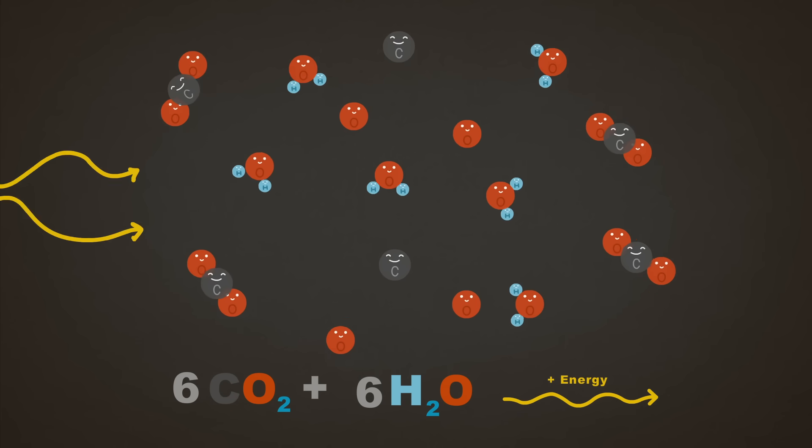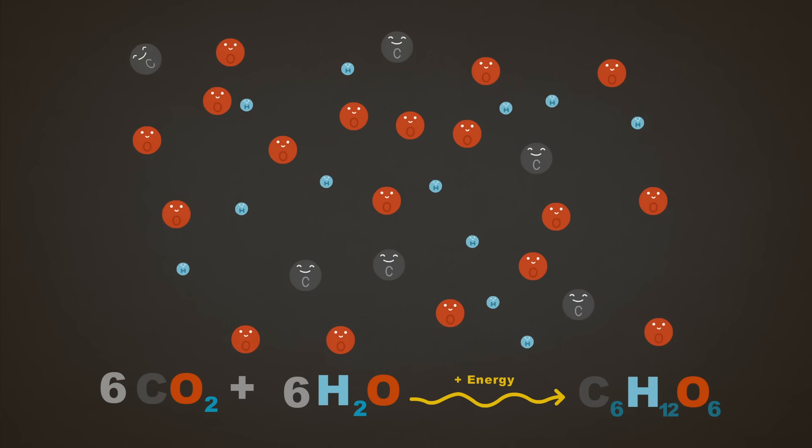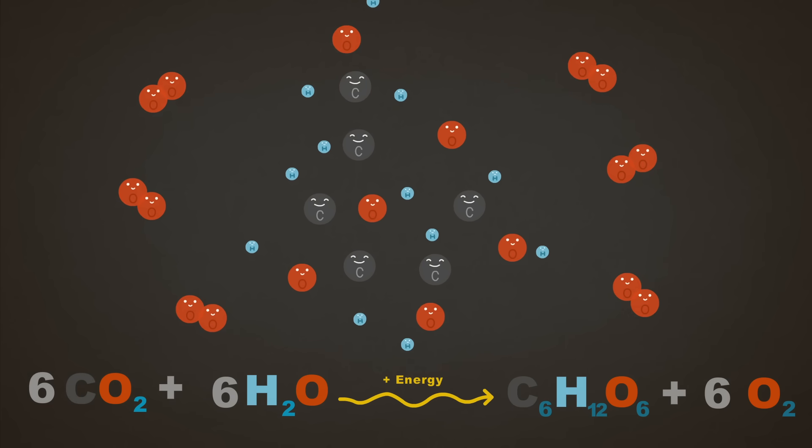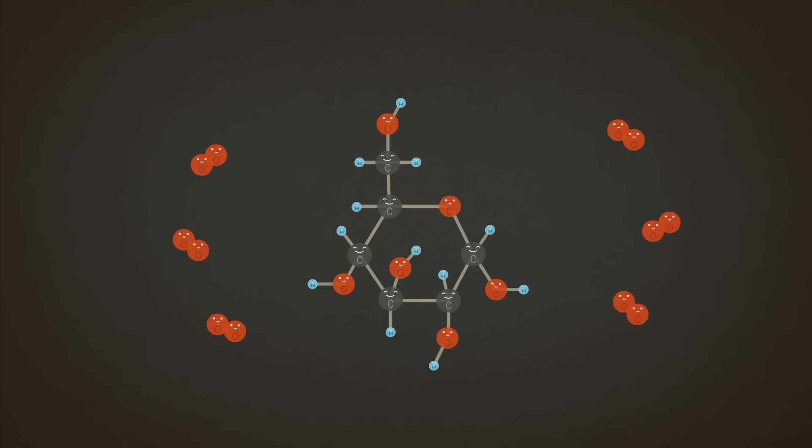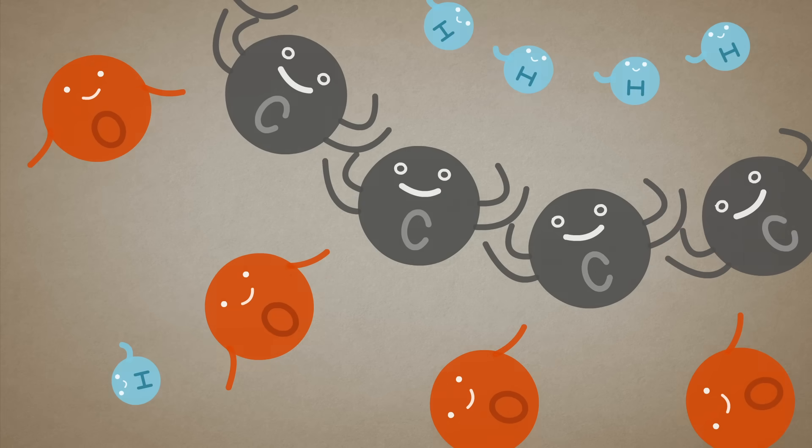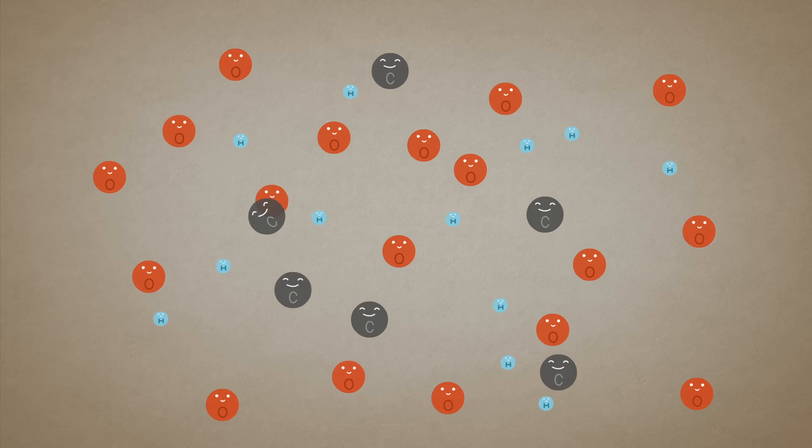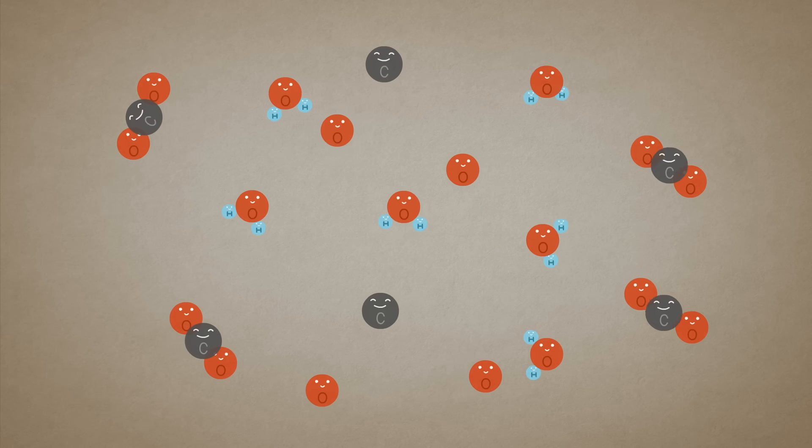Add a little energy, and we can get them to reshuffle themselves to a simple sugar and some oxygen gas. Our atoms are all accounted for: six carbon, 12 hydrogen, and 18 oxygen. The energy we applied is now stored in the bonds between atoms. We can re-release that energy by breaking that sugar back into water and carbon dioxide. And still, same atoms.